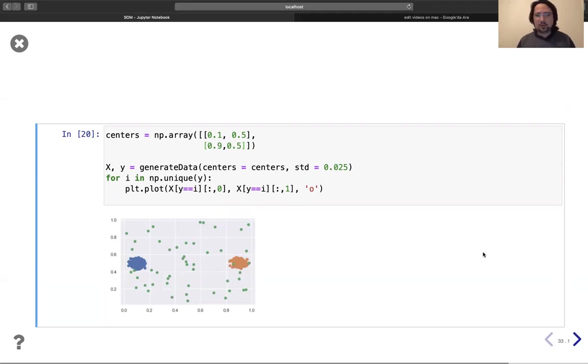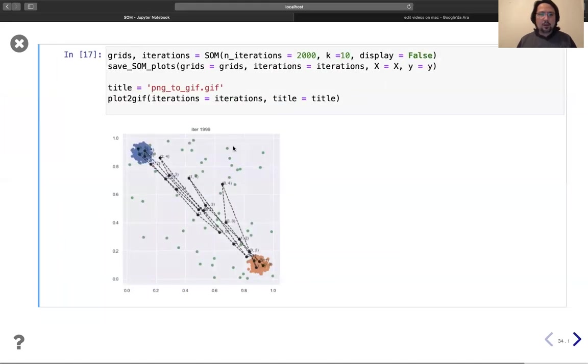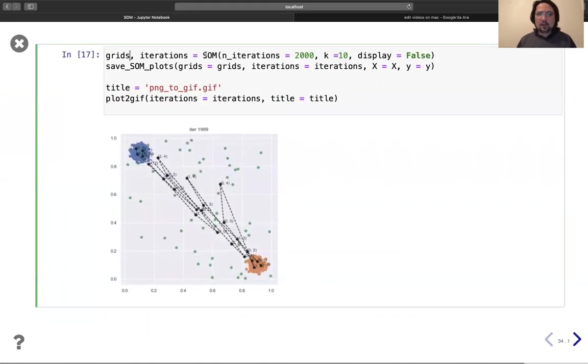Okay, there are two poles here, two clusters, and there are some anomaly points. So this is our data. Now I will run this SOM function.